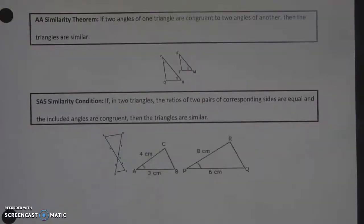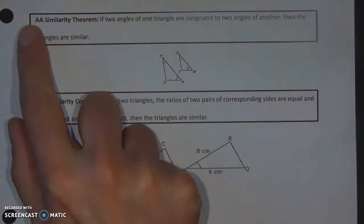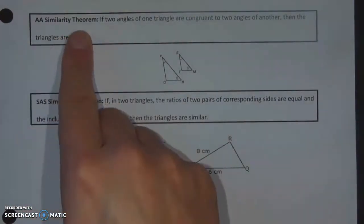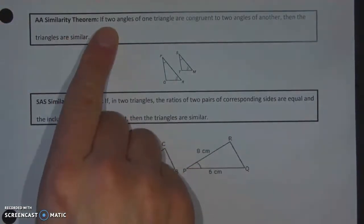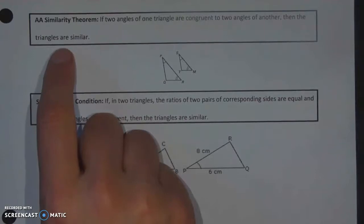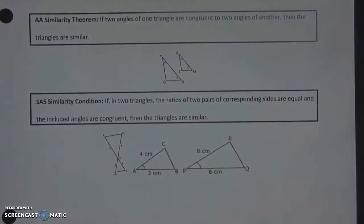Now I'm going to skip that next problem. Instead, we're going to look at the next similarity statement. The next one's pretty simple. It's the AA similarity theorem. That just means that if any two angles of one triangle are congruent to two angles of another, then the triangles have to be similar.